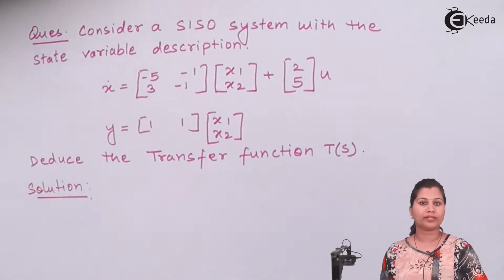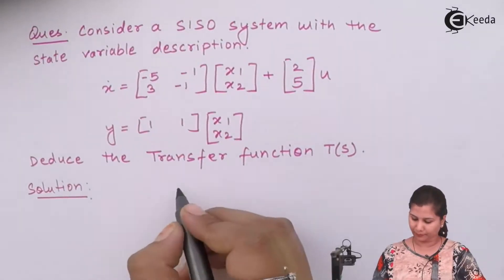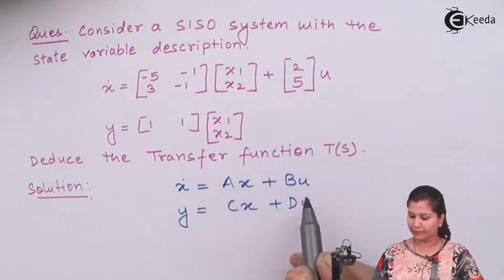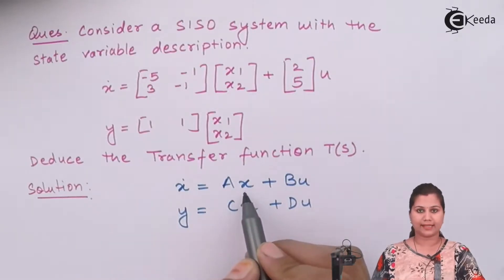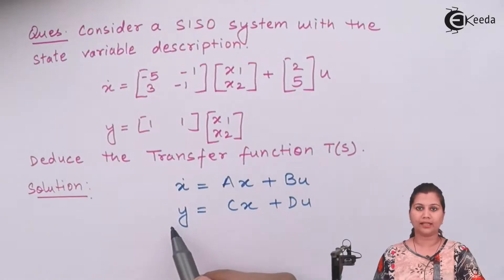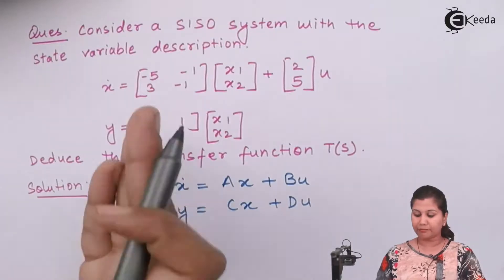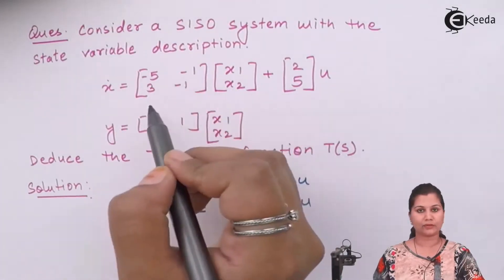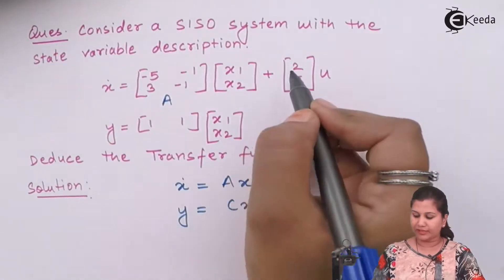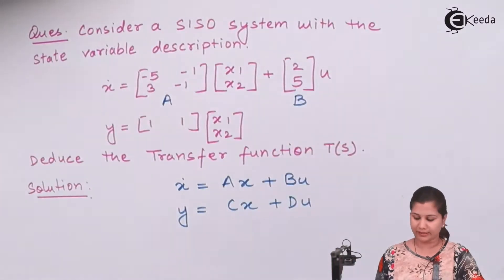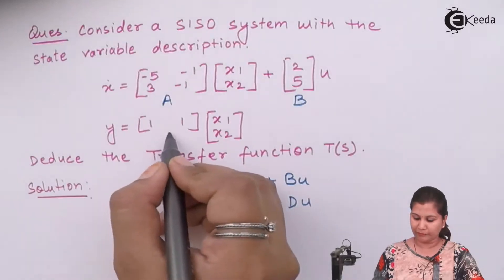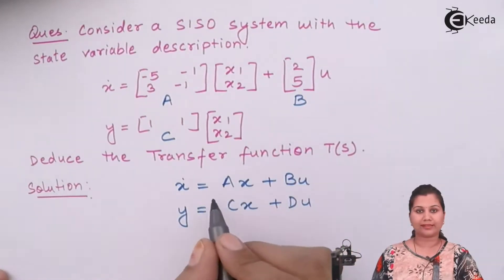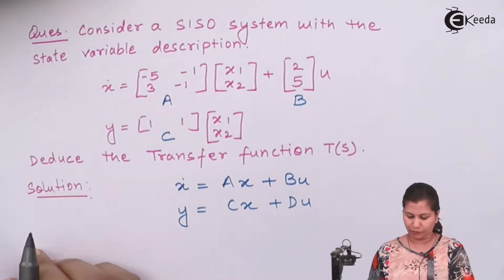We know that the general form of the state model is given by the generalized state model where A, B, C, and D are the matrices, x is the state vector, u is the input, and y is the output. Comparing with the given state model, the A matrix is [-5, -1; 3, -1], the B matrix is [2; 5], C matrix is [1, 1], and D matrix is absent so D equals 0.